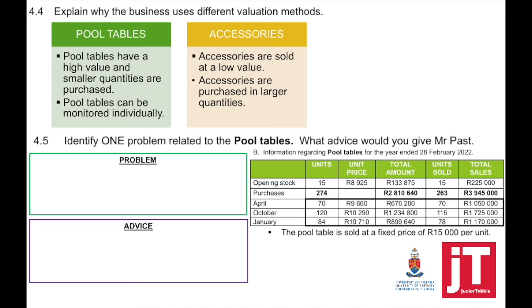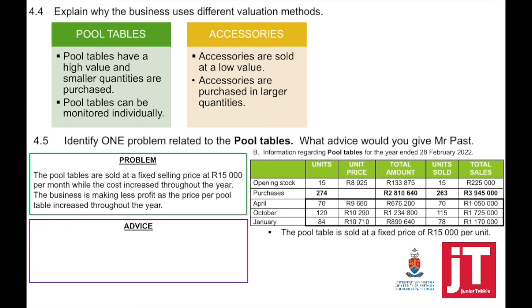Question 4.5: identify one problem related to pool tables and advise Mr. Past. The unit cost increases every time a purchase is made, yet the selling price remains fixed at R15,000 per unit. This means costs are rising while revenue stays constant. The advice is that the owner should use a fixed markup percentage instead of a fixed selling price, so that as costs increase, the selling price increases accordingly.